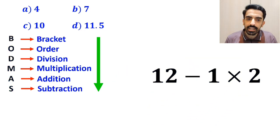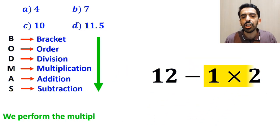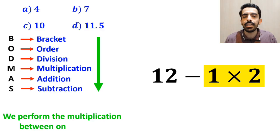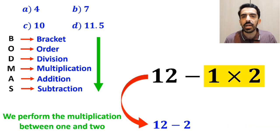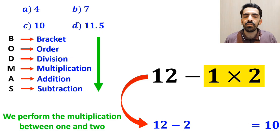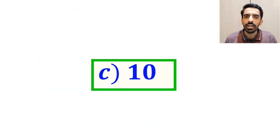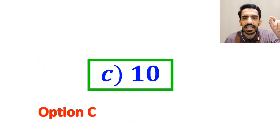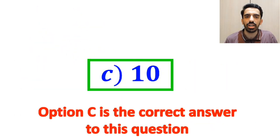In the final step, we perform the multiplication between 1 and 2, which simplifies the expression to 12 minus 2. And finally, the value of this expression will be 10. Therefore, option C is the correct answer to this question.